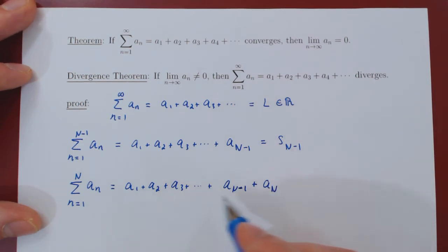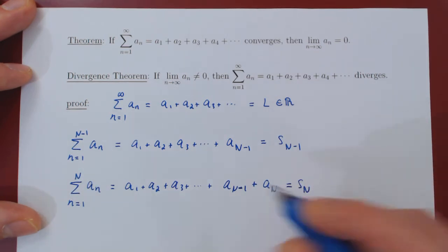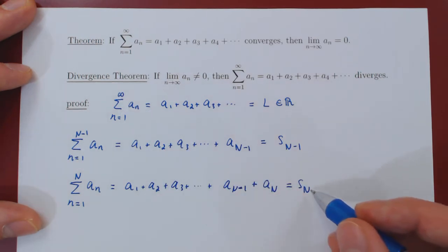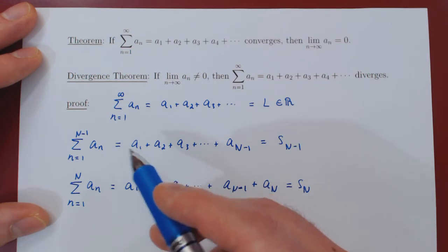And we will call this S subscript uppercase N, the partial sum of the infinite series, where we truncate at the nth term of the series.